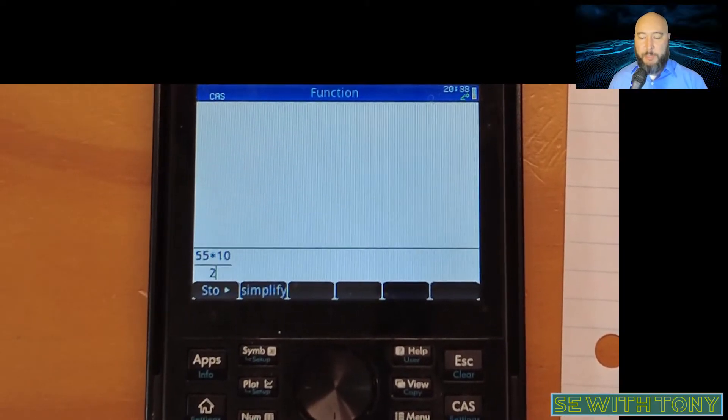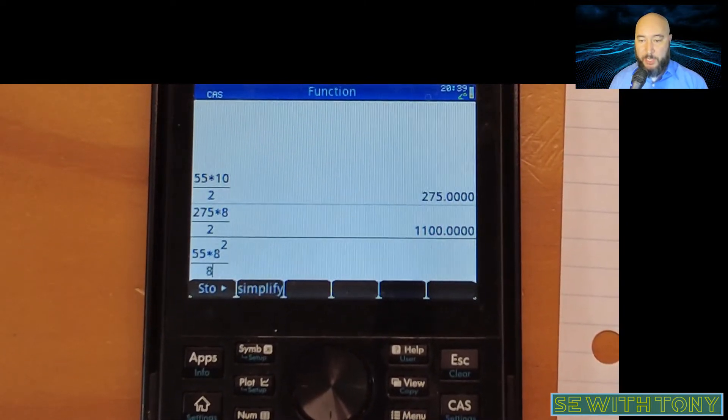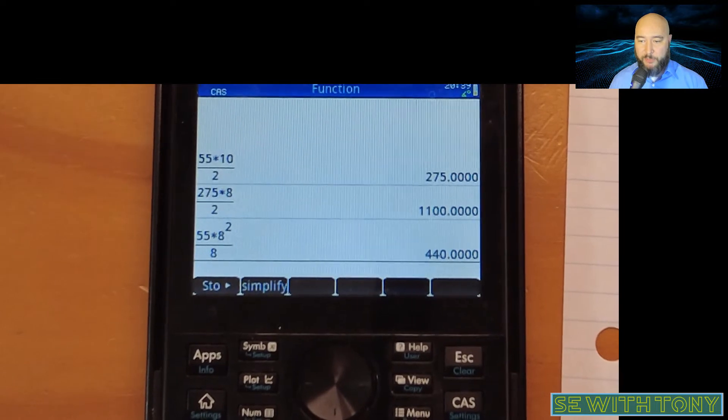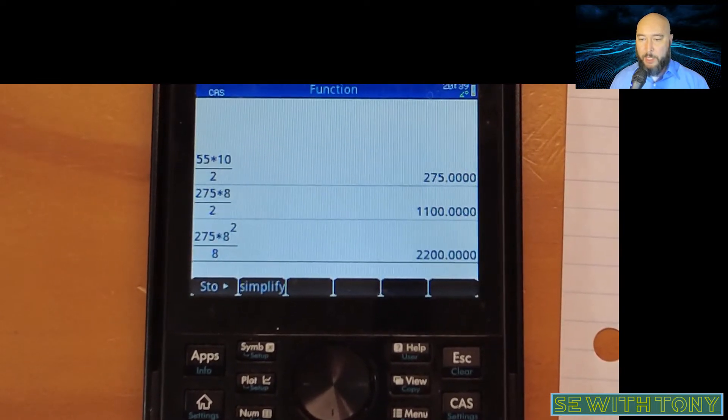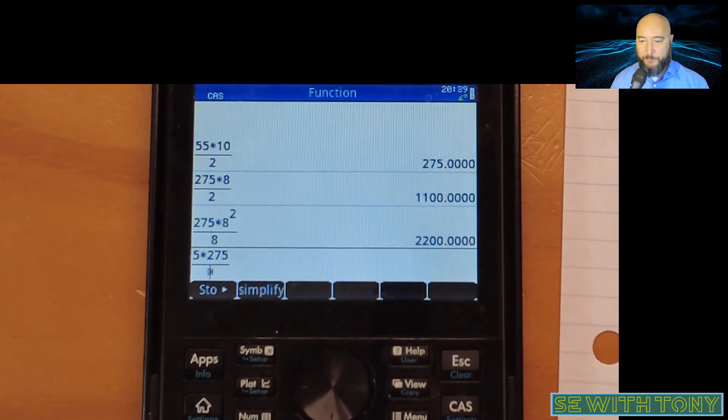This is the HP Prime graphing calculator, and you can see it has a color display, a touch screen. I'm punching in the numbers from the design example to get the load, the reaction, the bending moment, and the deflection.